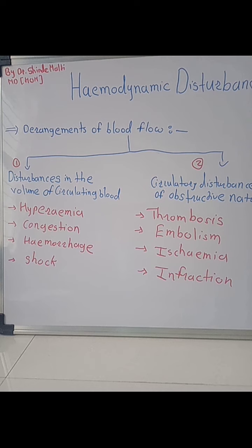Ischemia means deficient blood supply to a part of a tissue — that is, decreased blood supply to a part of a tissue. Infarction is the process of tissue necrosis resulting from decreased blood supply. The necrosis of tissue occurs due to the decrease in blood supply, and this is called infarction.